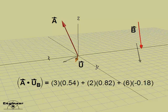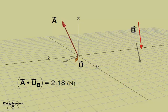Now that we have the unit vector, we can calculate A dot U which equals 2.18 newtons. Notice that vector A has units of newtons and the unit vector is unitless. Therefore, the scalar has units of newtons.